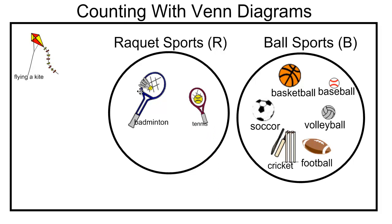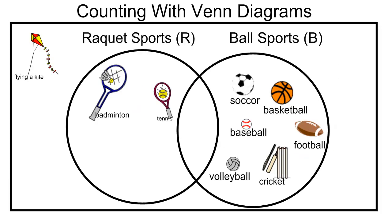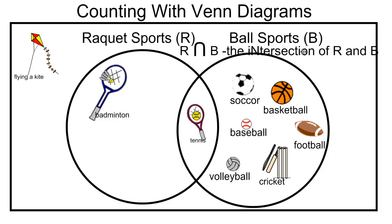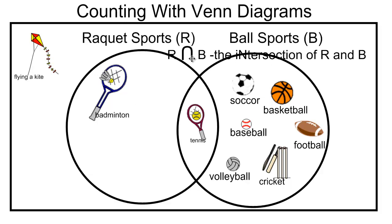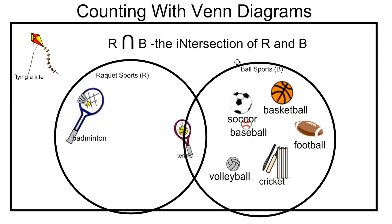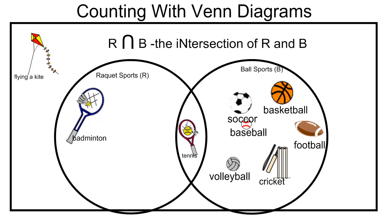Now, notice this — we have a problem here in that tennis involves both a racket and a ball. So we're going to introduce the idea of the intersection of two sets. To adequately represent this, we overlap the two sets in our Venn diagram and put things that have characteristics of both into the part where they overlap. This is known as the intersection of two sets, and we symbolize it with an upside-down horseshoe. So R ∩ B means the intersection of sets R and B — elements that belong to both sets.